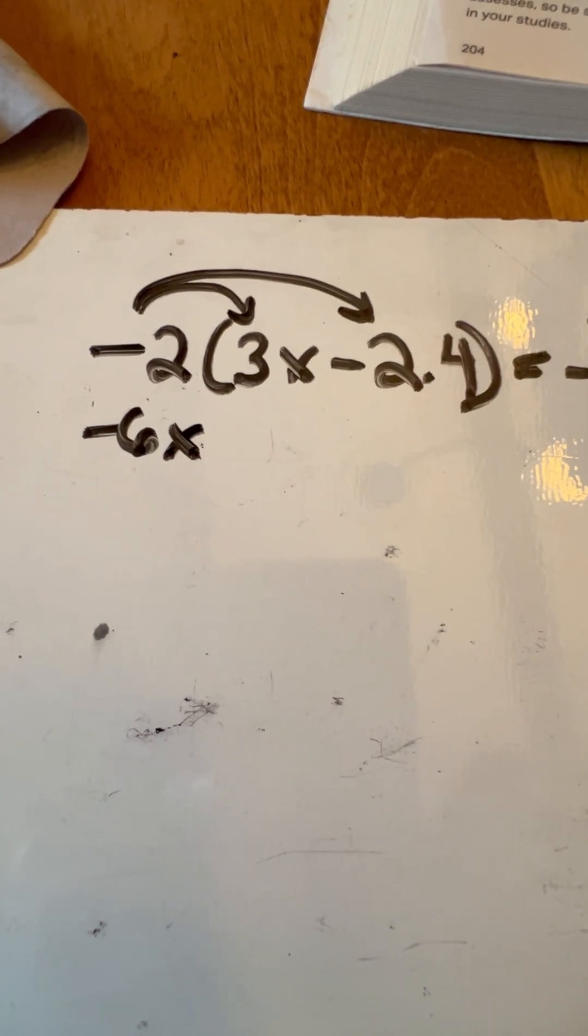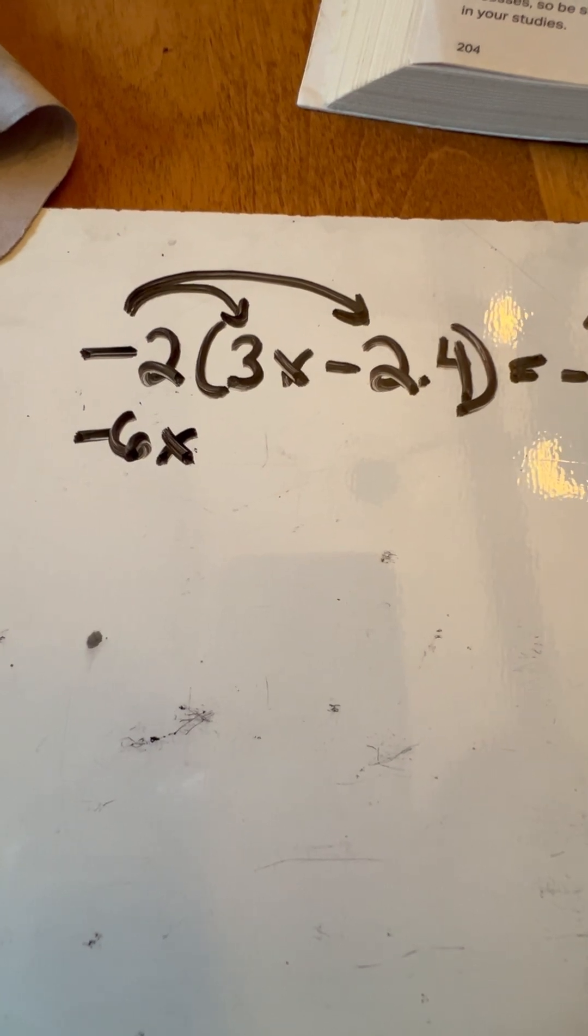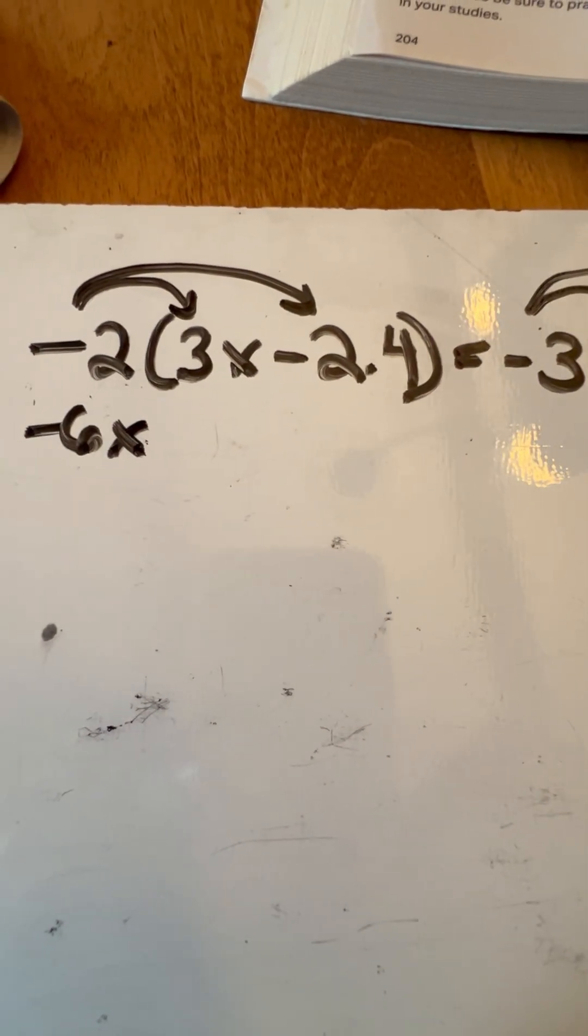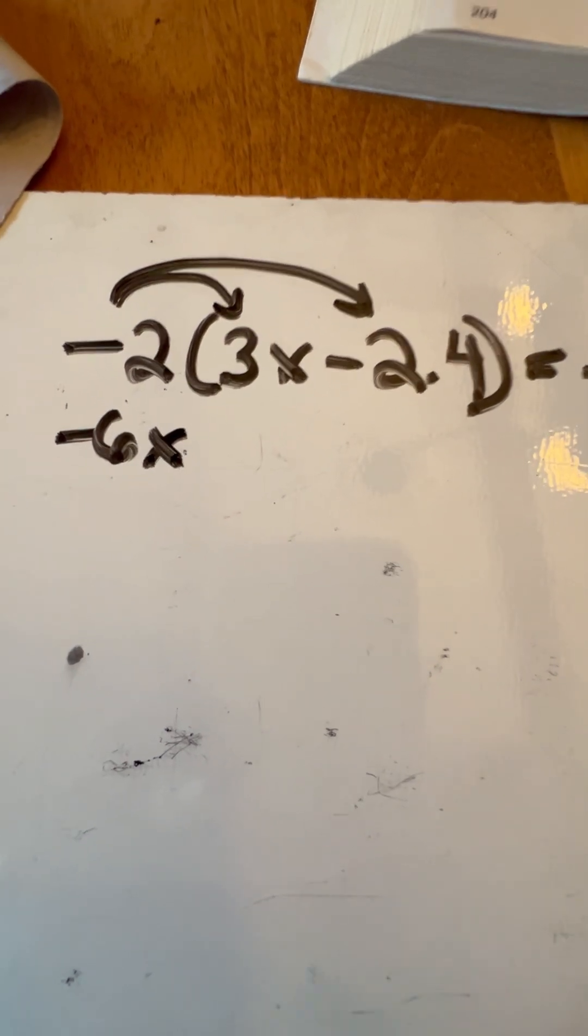All right, so the next part we're going to do is we're going to take that distribution of the negative 2, and we're going to multiply that times that negative 2.4. And again, that is a negative, so don't forget that. And we're going to get a positive 4.8 here.